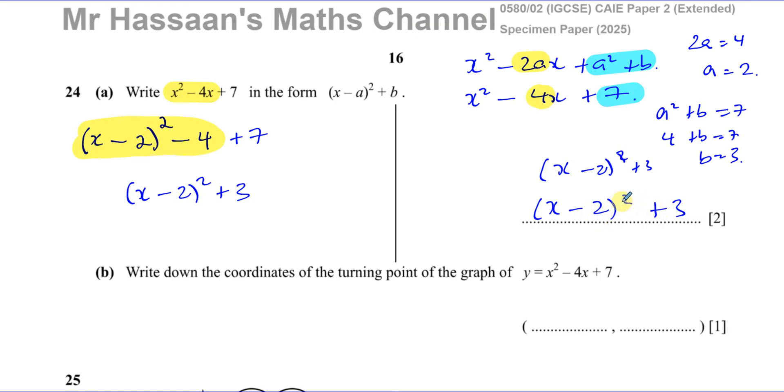Now part b of the question is telling us to write down the coordinates of the turning point of the graph of y equals x squared minus 4x plus 7. There's two points here. One, it's only worth one mark. The other thing it says is write down, which implies you don't have to do any calculations. And the other thing we should notice is that this basically is exactly the same as what we had in the question in the beginning. They're the same thing. So of course it's got something to do with part a.